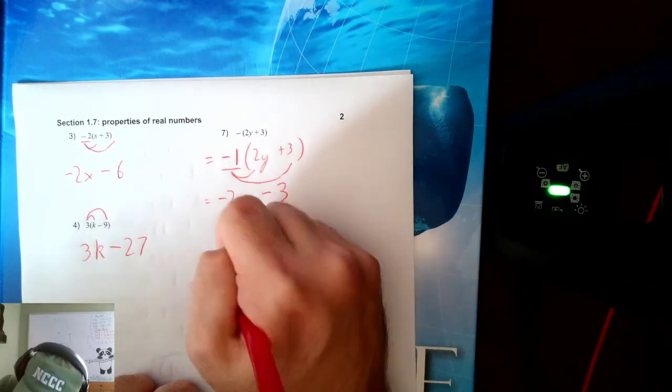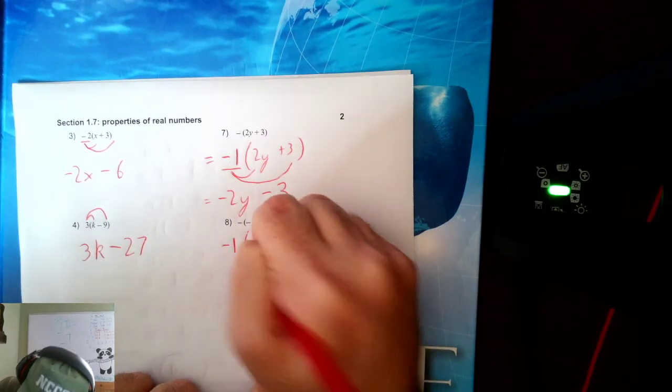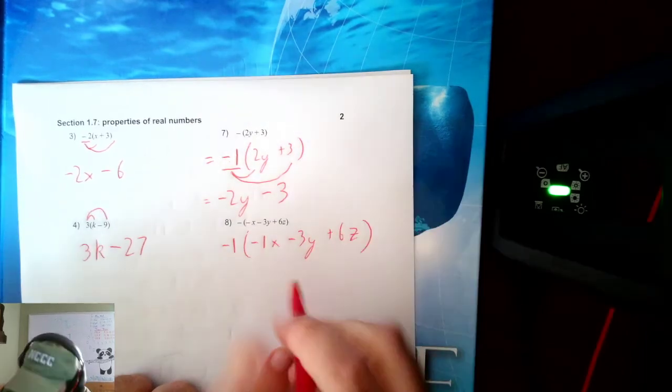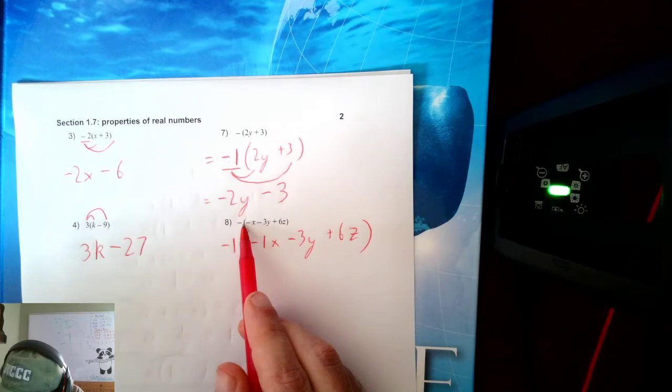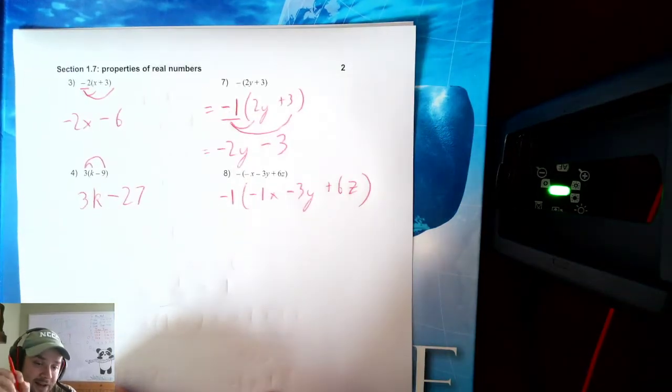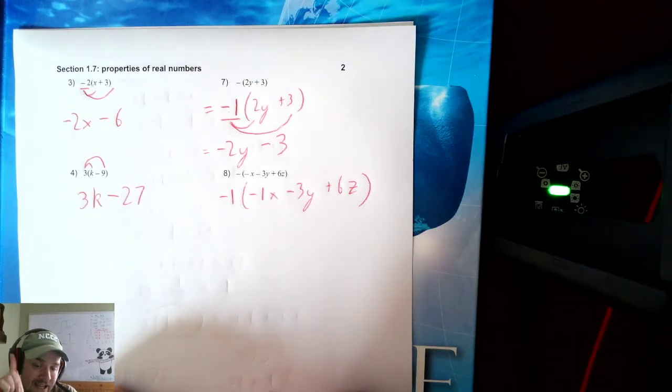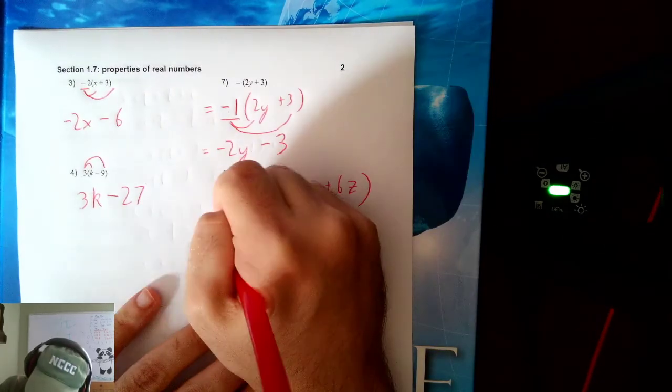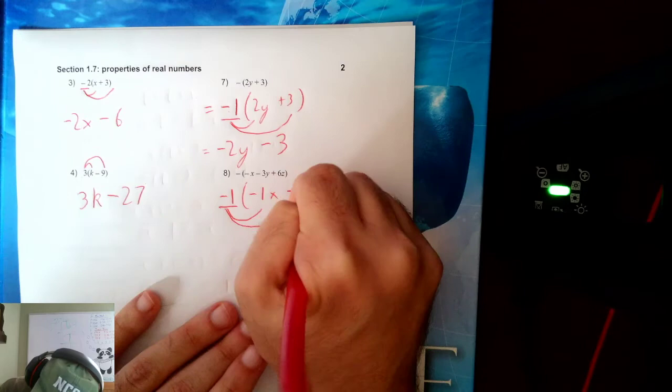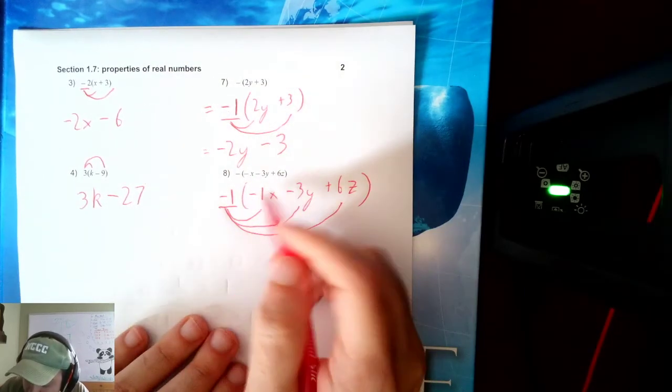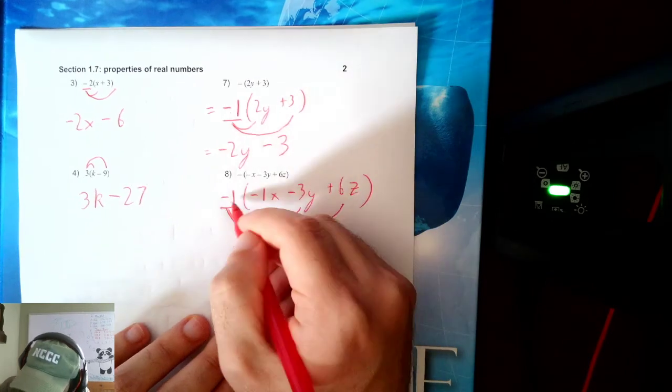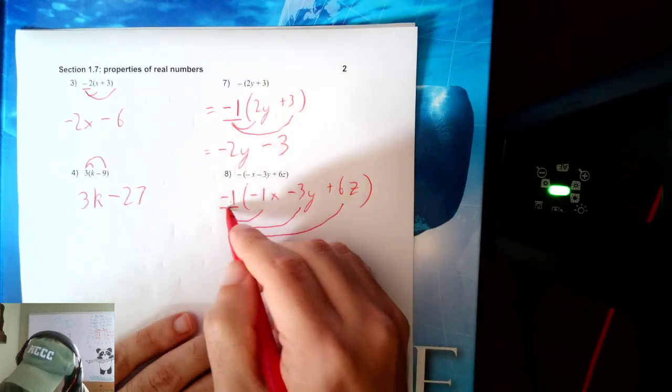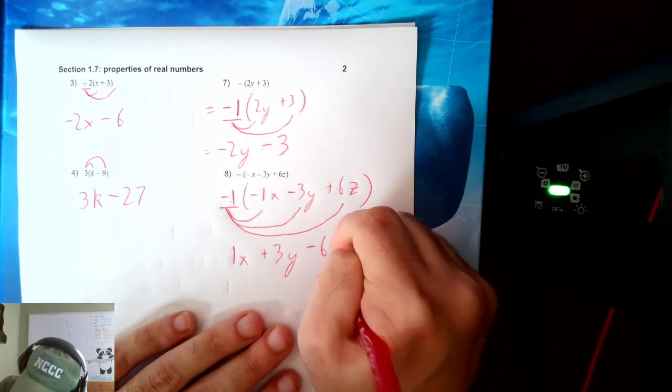Then same thing here. There's actually a negative 1 floating out front of two of these values. This X has a negative 1 in front of it and this parentheses has a negative 1 in front of it. Remember, when you don't write the number in front of a value, you can always assume that it has a hidden 1 in front of a variable or a parentheses. Because multiplying by 1 doesn't change the value. So I'm going to distribute this negative 1 to everything. Negative 1 and negative 1 make positive 1X. Negative 1 and minus 3 make plus 3Y. And then negative 1 and plus 6 make minus 6Z.